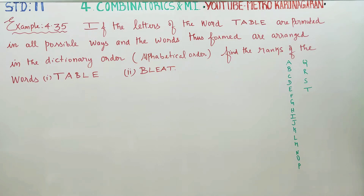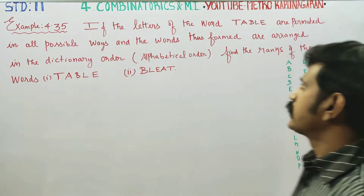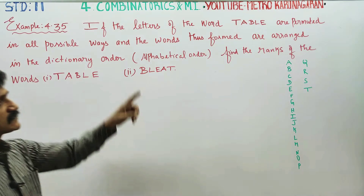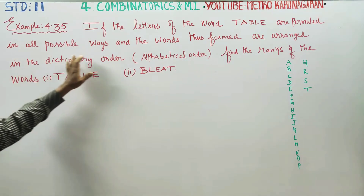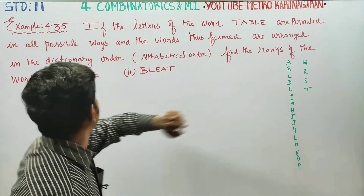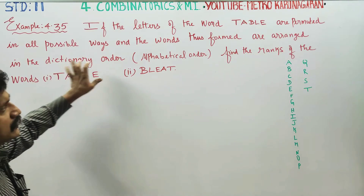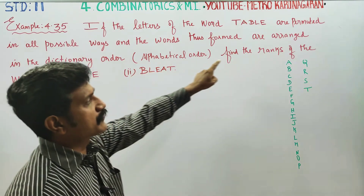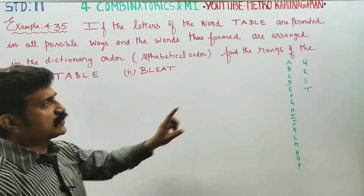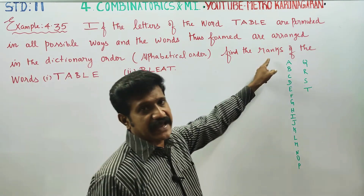Dear students, I am Etru Karanagaran. In Example 4.35, if the letters of the word TABLE are permuted in all possible ways and the words thus formed are arranged in a dictionary, that is alphabetical order, find the rank of the word TABLE. What is the meaning of rank?